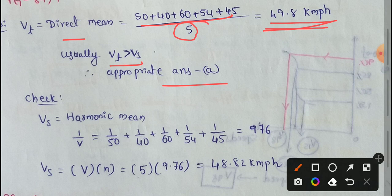Our time-mean speed is 49.8 km per hour. Vs is the harmonic mean.